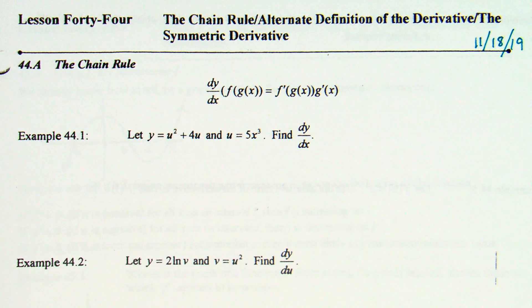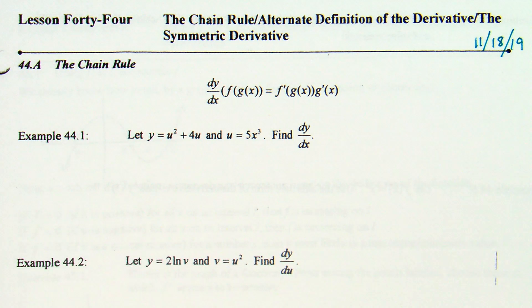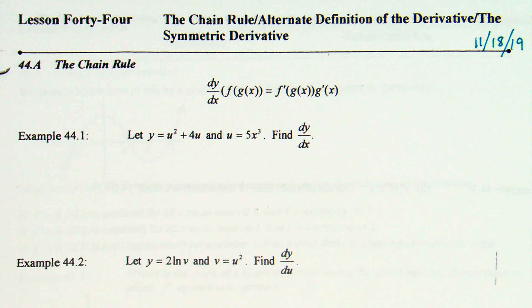Lesson 44 covers a couple of different things. We already talked about the chain rule previously, and we're going to talk about it some more. I'll show you a different way to do the chain rule that may help you understand it a little better. You can still go back to the other way too. Then we're also going to talk about some other definitions of the derivative. We already have our basic definition — the limit — and these are just some other variations of it.